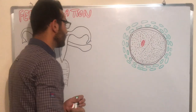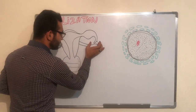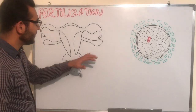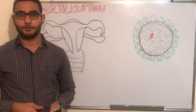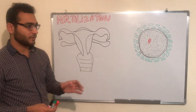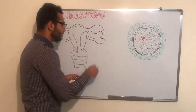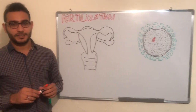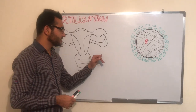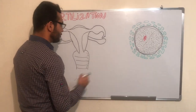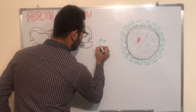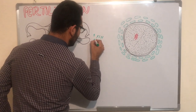This structure is called the fimbria. When the ovum is produced during ovulation — at around day 14 of the ovulatory process — two hormone levels are high: the follicle stimulating hormone (FSH) and the luteinizing hormone (LH).